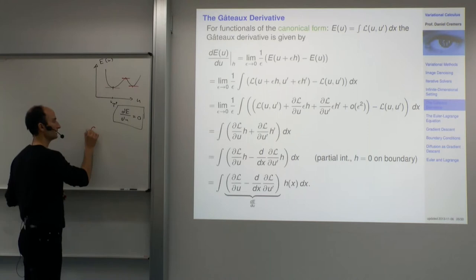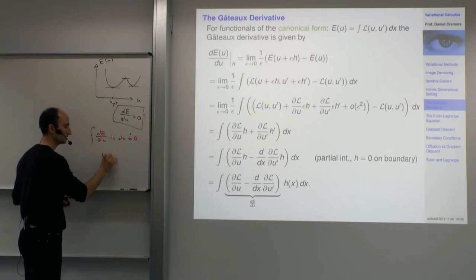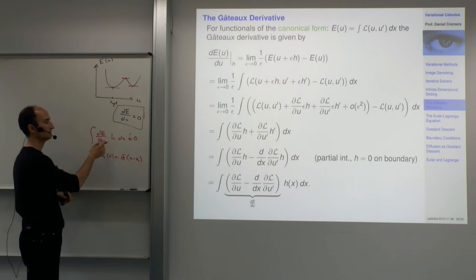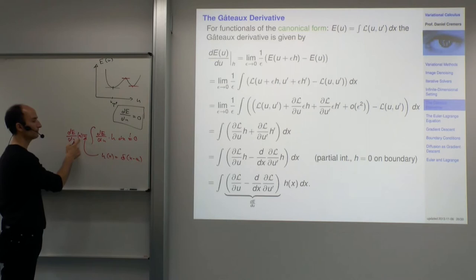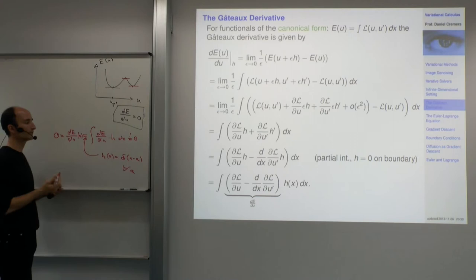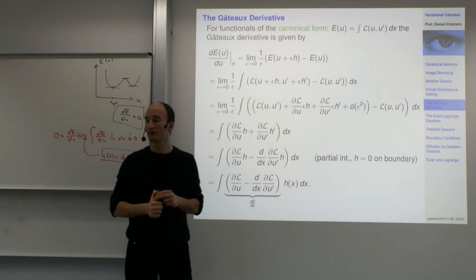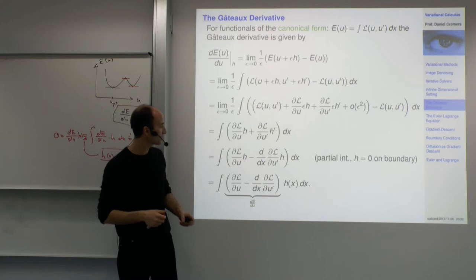The integral of dE by du times h dx must be zero for all h. If we choose h(x) as the delta distribution delta(x minus a) for any value a, then we get dE by du evaluated at location a. This must be zero for all a, meaning we can add a perturbation in one location only. Therefore the expression in the brackets must be zero.